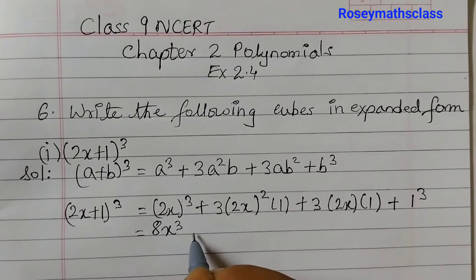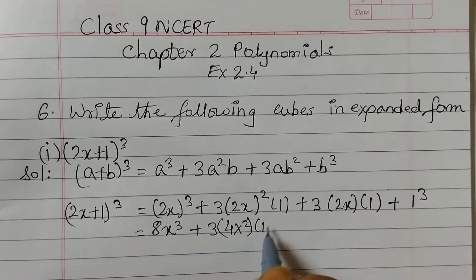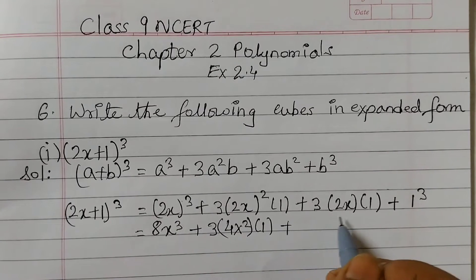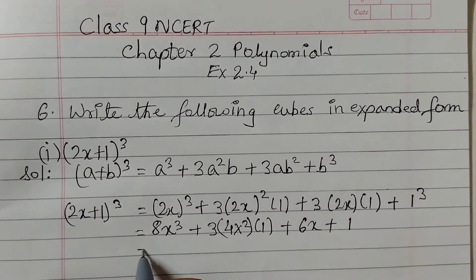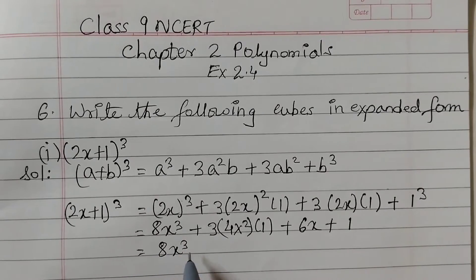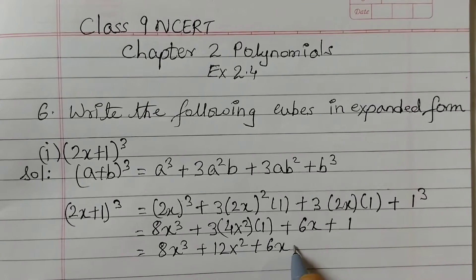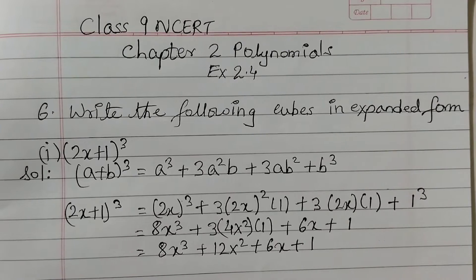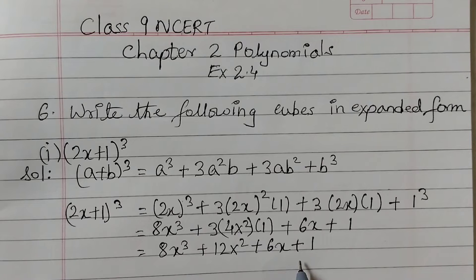2³ = 8, so we get 8x³. Then 3 × (2x)²: 2² = 4, so 3 × 4 = 12, giving 12x². Then 3 × 2x × 1 = 6x, and 1³ = 1. So the result is 8x³ + 12x² + 6x + 1. We check that this is in standard form — decreasing order of exponents: 3, 2, 1, and a constant. This is our final expanded form.